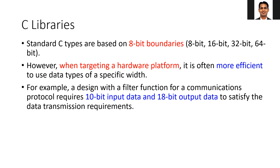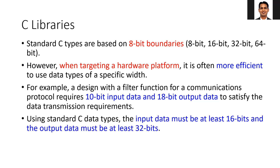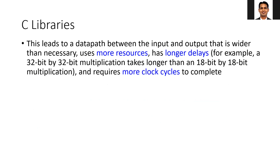these are the bit widths required to meet the desired accuracy. In the processor implementation, you need to choose either 16-bit input to get the desired accuracy or compromise on accuracy and choose 8-bit. Similarly, for the output data you would either compromise on accuracy for 16-bit output or use more resources for 32-bit output. Using standard C data types, the input must be at least 16 bits and output at least 32-bit, leading to a data path wider than necessary, more resource usage, and longer delays since 32×32 multiplication takes more time than 18×18.